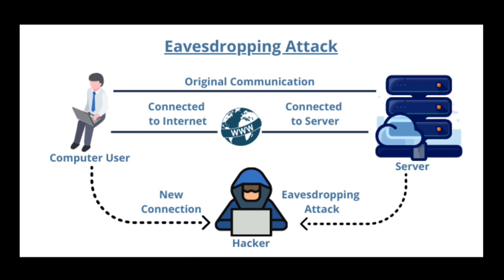Furthermore, Om can intercept and read all messages sent between Rhea and Nils. Additionally, Om can potentially modify and inject new messages into the conversation. Om can use various techniques such as packet sniffing and man-in-the-middle attacks to gain access to their communication, and can access sensitive information such as login credentials, credit card details, and other sensitive data.